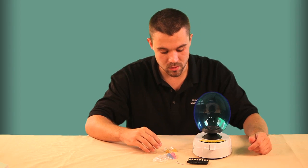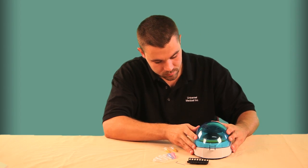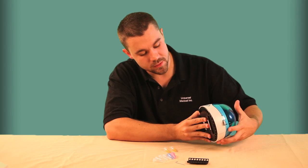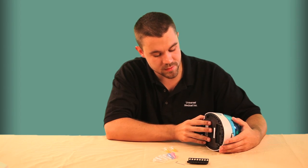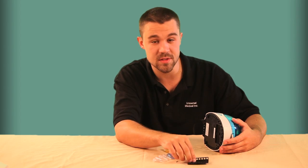Now if we flip the centrifuge over, you'll see a little storage compartment. This is for the allen key and the PCR strip rotor.